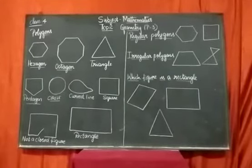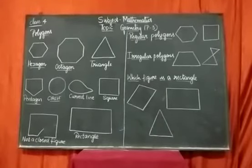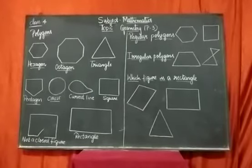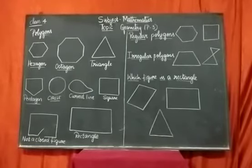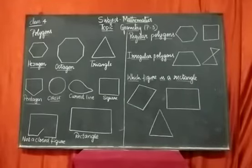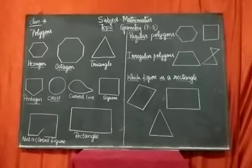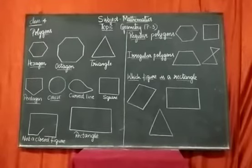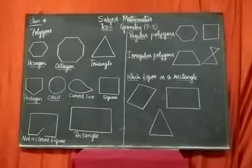Now we will be learning about polygons. So what are polygons, students? Polygon is nothing but a simple closed figure formed by line segments which are in the same plane. A simple closed figure made up of only line segments is called a polygon.